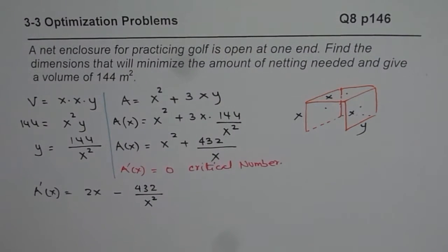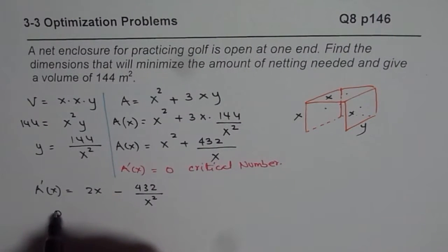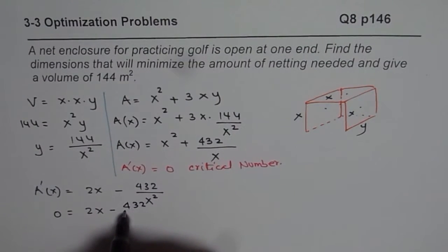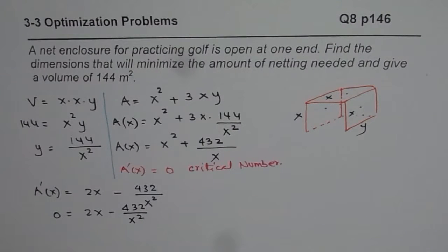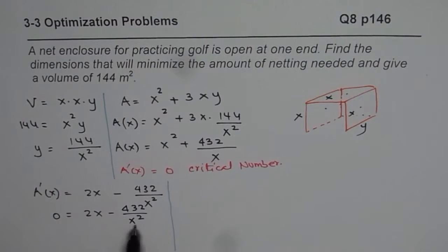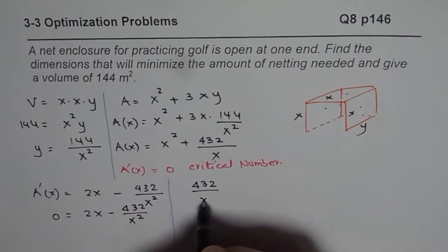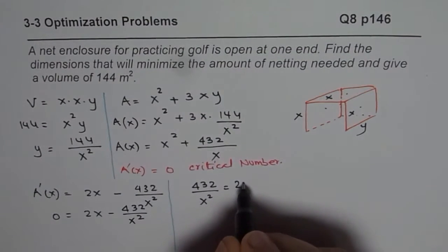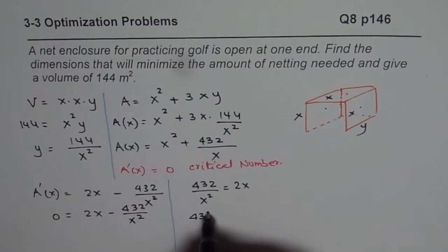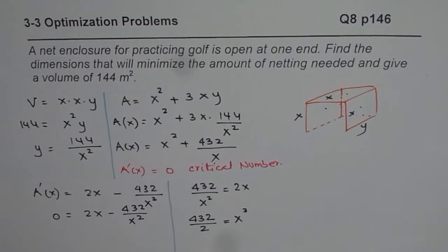And when you equate this derivative to 0, so you get 0 equals 2x minus 432 over x square. So the value of x, which is a critical number, can now be calculated. So what we get from here is 432 over x square equals 2x. You can cross multiply and divide by 2, so get 432 divided by 2 equals x cube.